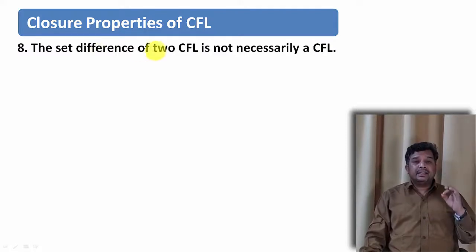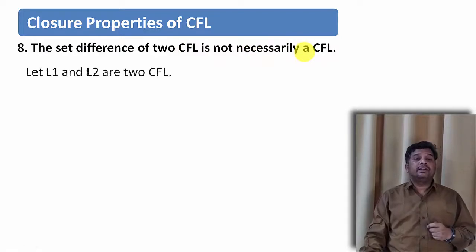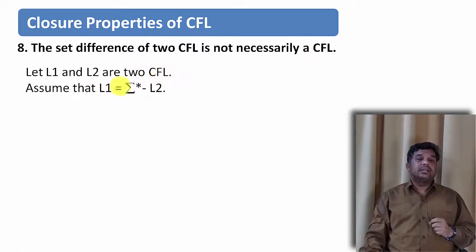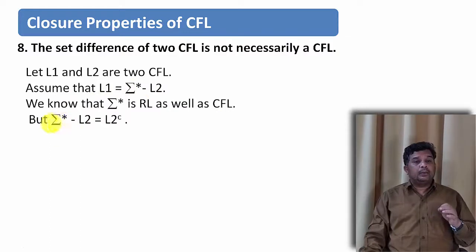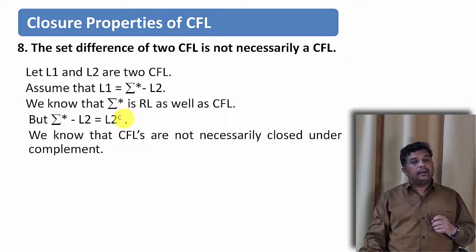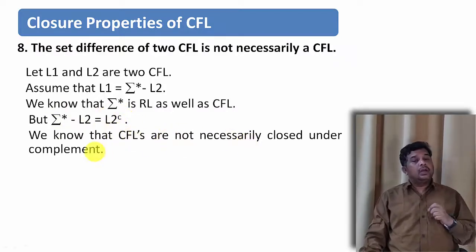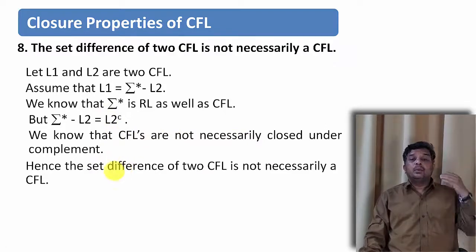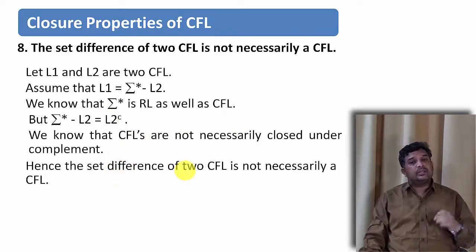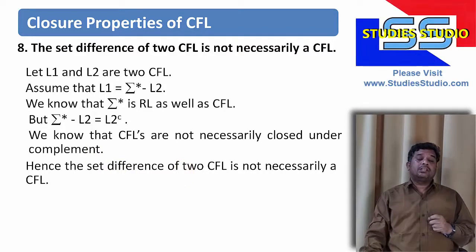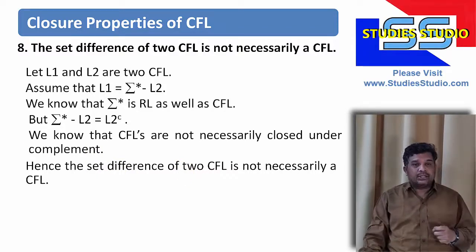The eighth Closure Property: the set difference of two context-free languages is not necessarily a context-free language. Let L1 and L2 be two context-free languages. Let L1 equal sigma star minus L2. But sigma star minus L2 is nothing but L2's complement, and we know that context-free languages are not necessarily closed under complementation. Hence we can say the set difference of two context-free languages need not be a context-free language.